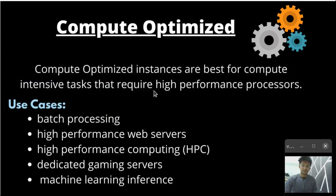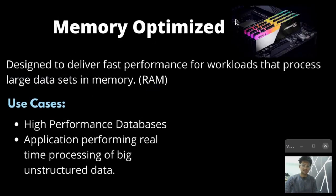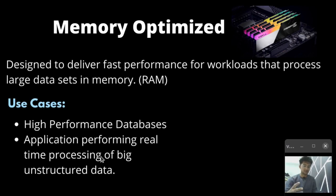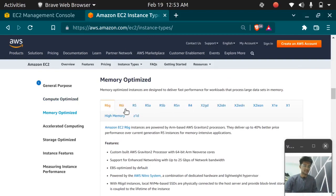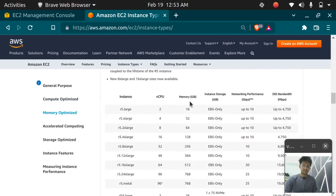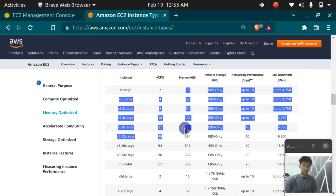The next instance type is memory optimized. Memory optimized is designed to deliver fast performance for workloads that process large data sets in memory. Whenever you want more RAM, you can use memory optimized instances. The use cases are high-performance databases or applications performing real-time processing of big unstructured data. The memory optimized instances are the R family — R stands for RAM — and the memory for these instance types is quite large.